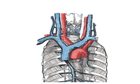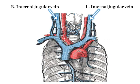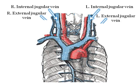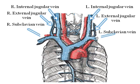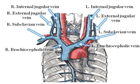Blood returning to the heart from the brain comes down the neck through the internal jugular vein, while blood from the head and face drains through the external jugular vein. The internal and external jugular veins on both sides combine with the subclavian veins — bringing blood back from the arms — and drain into the brachiocephalic veins. The right and left brachiocephalic veins then fuse together to become the superior vena cava, returning deoxygenated blood from the head and neck to the right atrium.